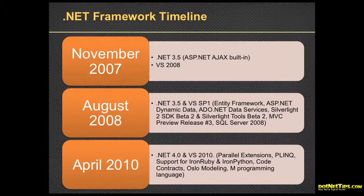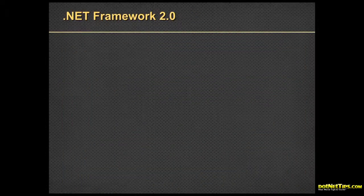The .NET framework is so big now that many teams can't wait for the next release to update or improve their code, so some teams are doing out-of-band releases. The .NET 2.0 framework was actually used in .NET 3 and .NET 3.5 — those two versions just put stuff on top of 2.0. It wasn't a whole new framework until .NET 4. That's really been the next big framework change: from .NET 2 to .NET 4.